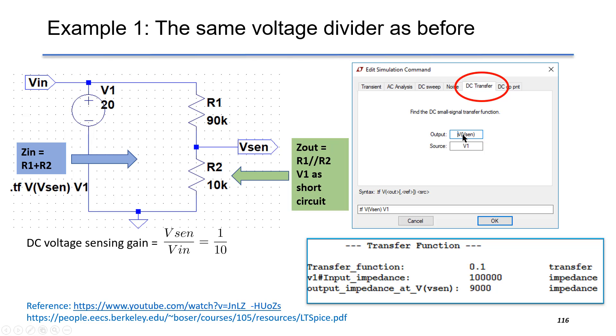So we type VVsense as the output and V1 as the independent source. Once you run the simulation, you will see the dialog box shown below,